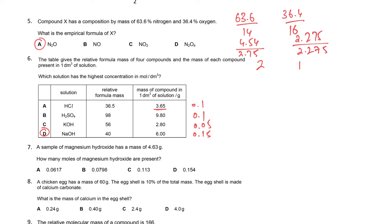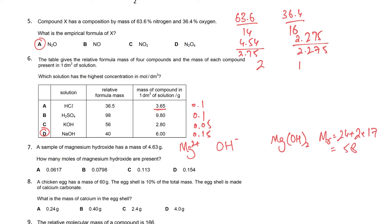For magnesium hydroxide, Mg²⁺ and OH⁻ cross-multiply to give Mg(OH)2. The Mr is 24 + 2×17 = 58. Moles = 4.63/58 = 0.0798 mol.